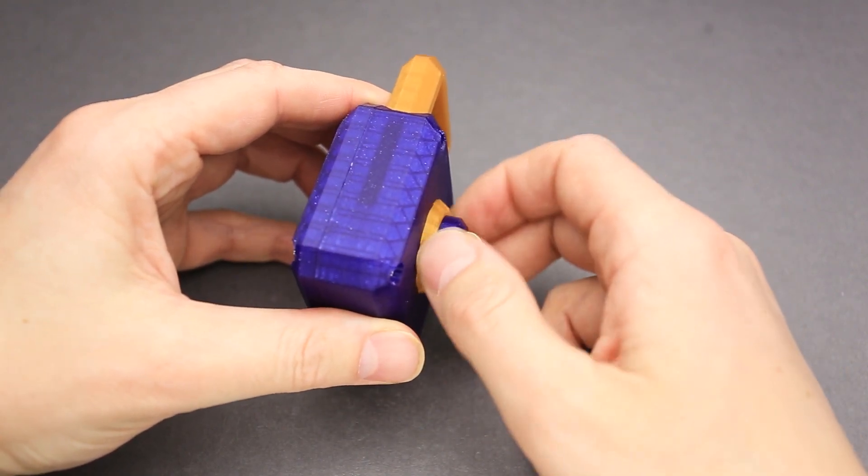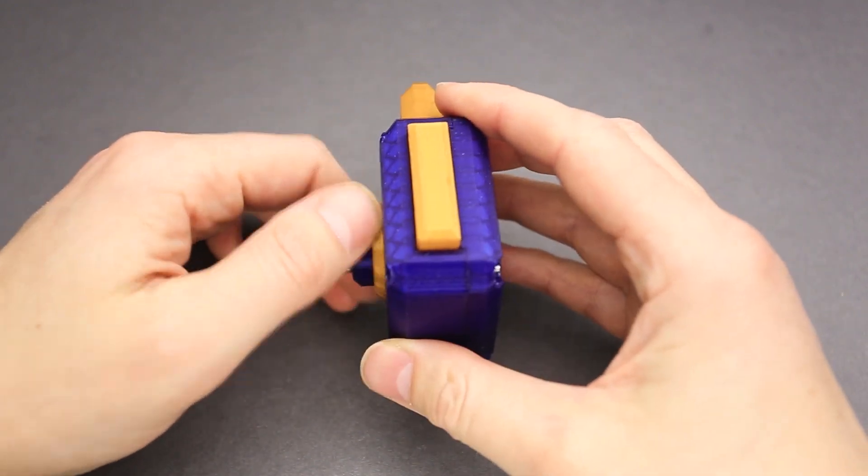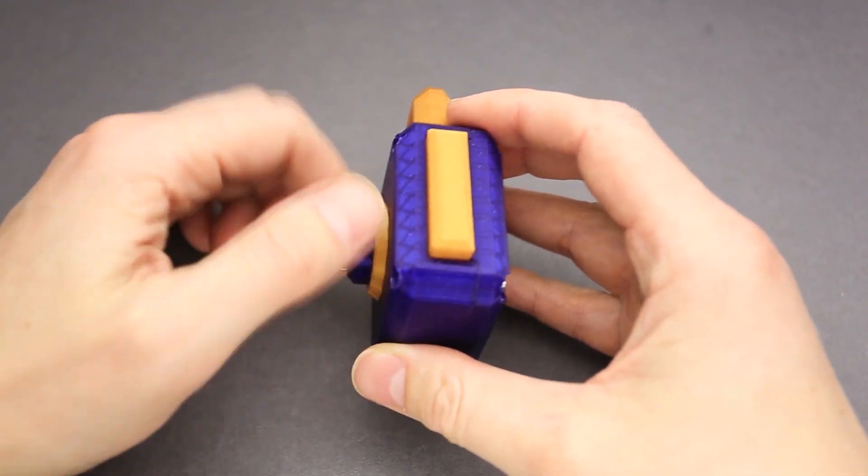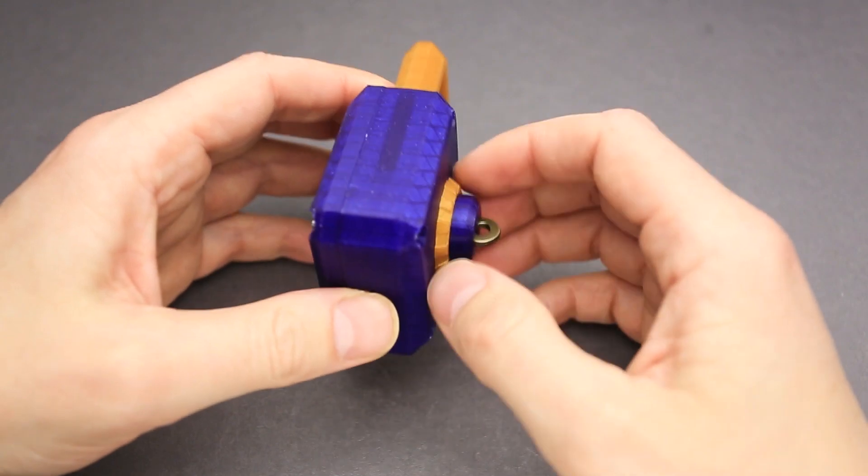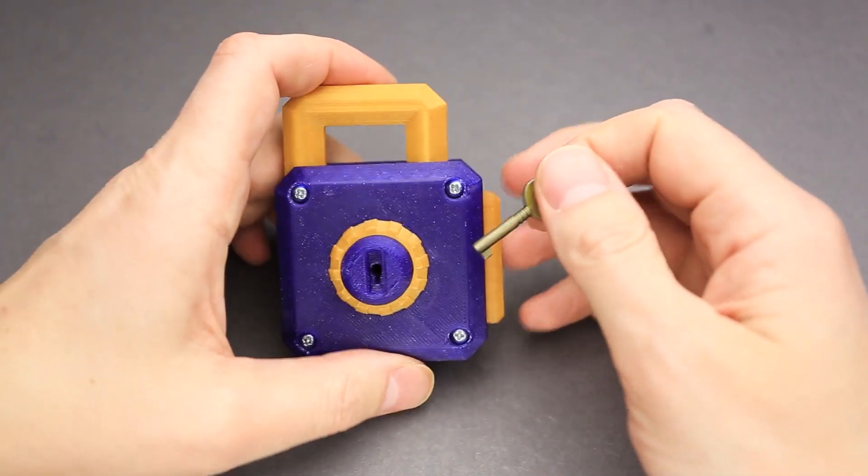I guess there is some kind of a pin when I flip the puzzle. With the button down, it blocks the circle, but now it is not blocked. And now it is blocked and I can remove the key. That's interesting.